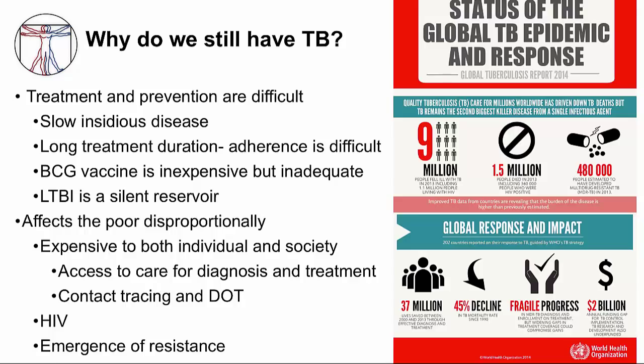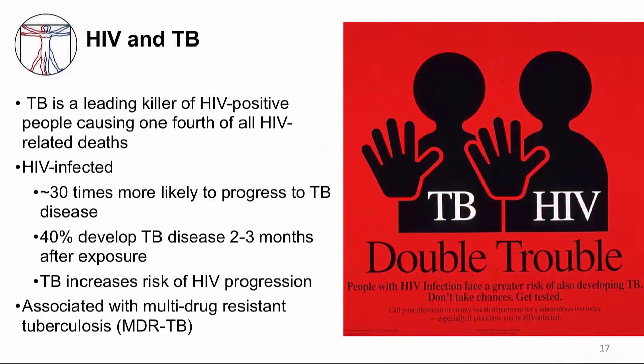Two other important reasons are HIV and multidrug resistance. TB and HIV are truly double trouble. TB is the leading killer of people with HIV infection, causing one-fourth of all HIV-related deaths. People with HIV are 30 times more likely to progress to TB disease, and if reinfected, almost half will develop TB disease within two to three months. TB also increases the risk of HIV progression, and TB disease in HIV patients is associated with multidrug resistance.